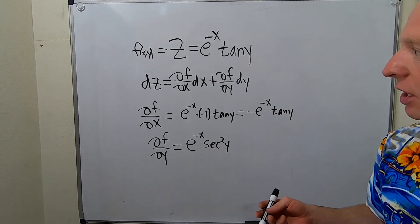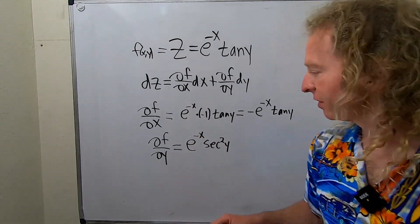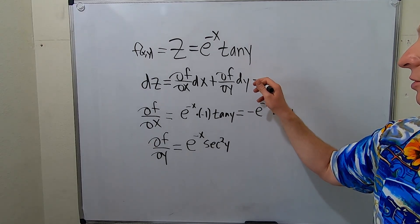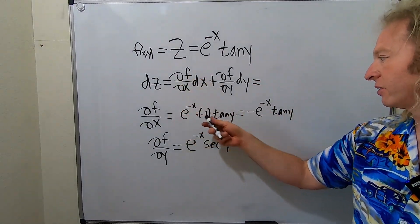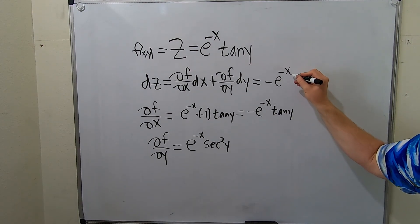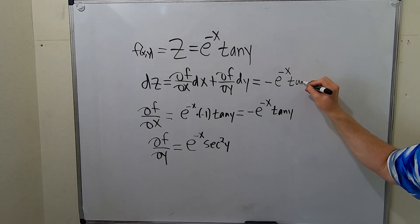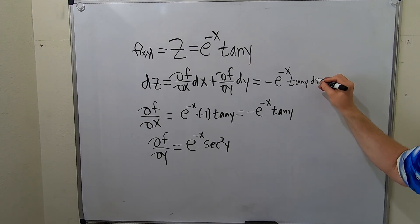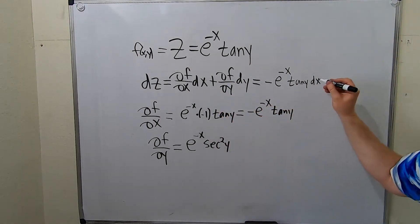So all we have to do now is just plug everything into the formula and we're good. So let's do that. So this is going to be equal to... So ∂f/∂x is this piece here: -e^(-x)tan(y)dx. Don't forget the dx, really important. And then plus.